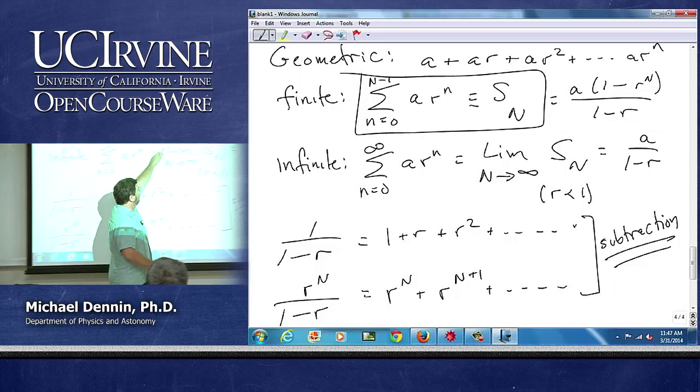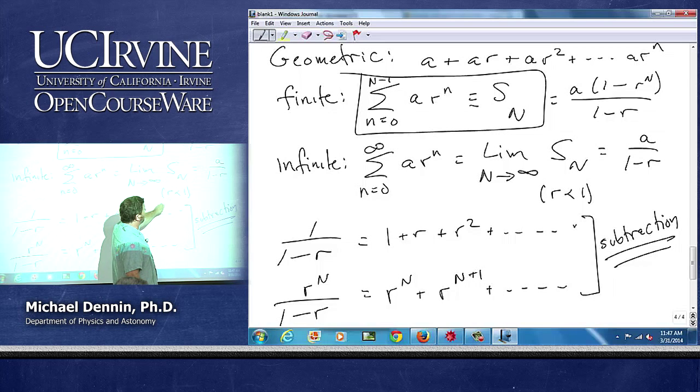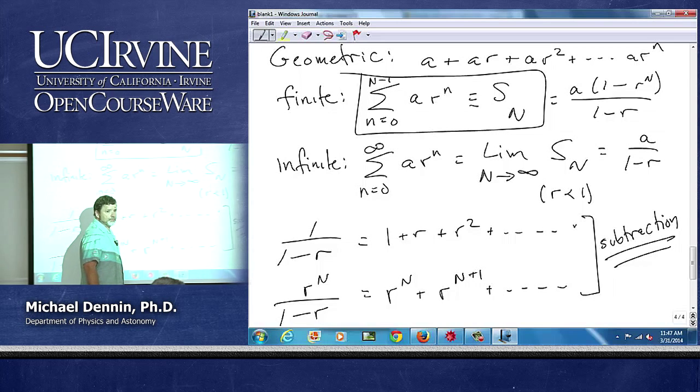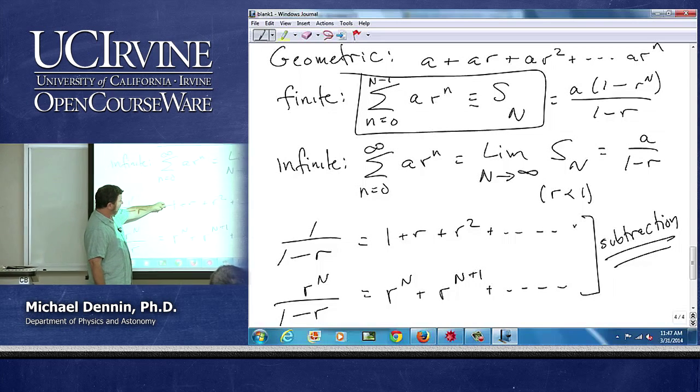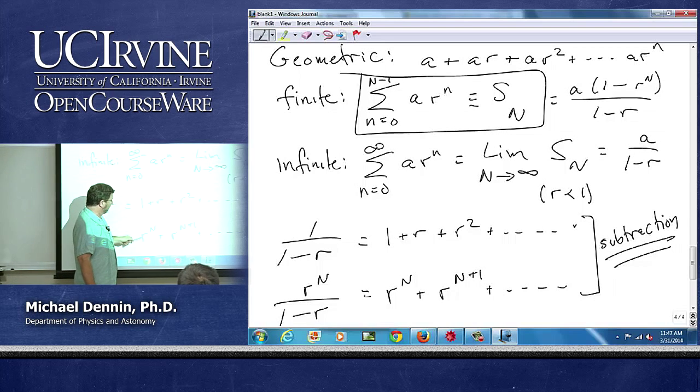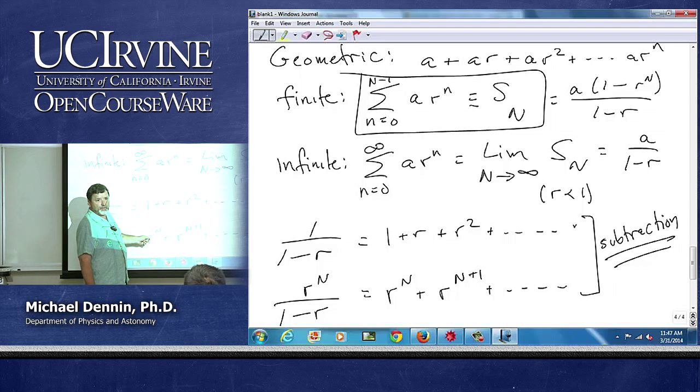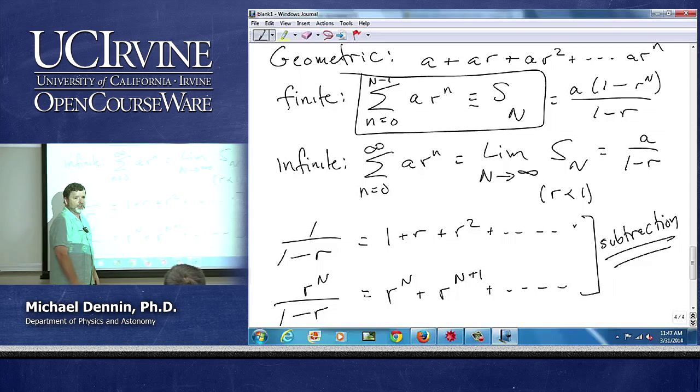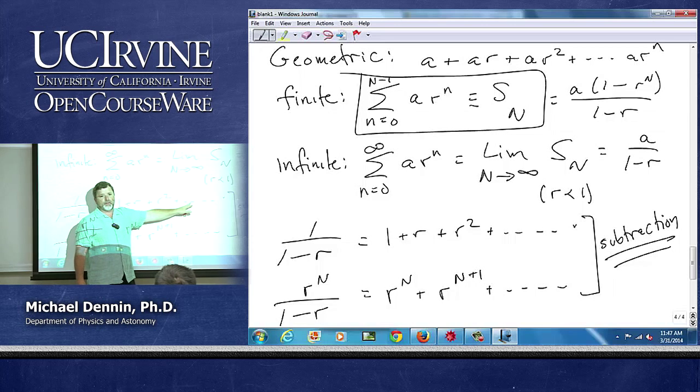So subtracting these two gives you this. Taking the limit as n goes to infinity as long as r is less than 1 gives you that. If I have this, this goes all the way out. At some point it hits r to the n, and everything from r to the n out subtracts out and disappears, and the only term that's left is r to the n minus 1.